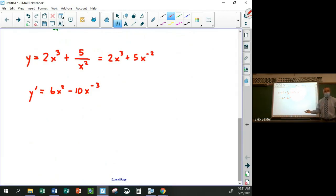Which I could simplify if I wanted to. If that was my end goal, I'd have to simplify it probably. Y double prime, this would be 12x plus 30x to the negative 4. And so on. Like I could find as many of these derivatives as I wanted to.